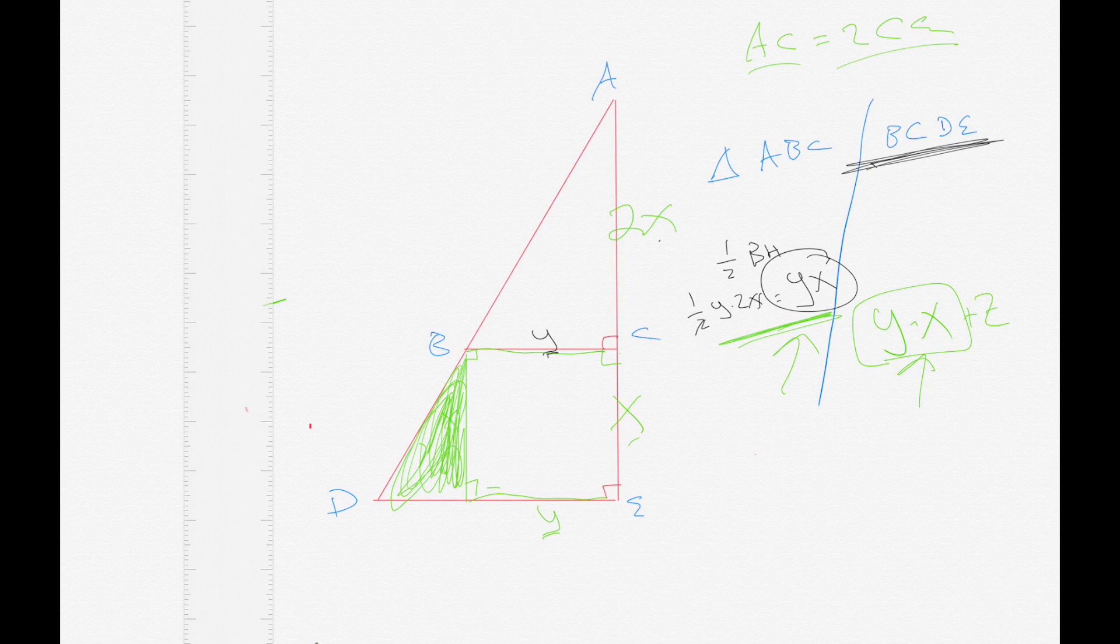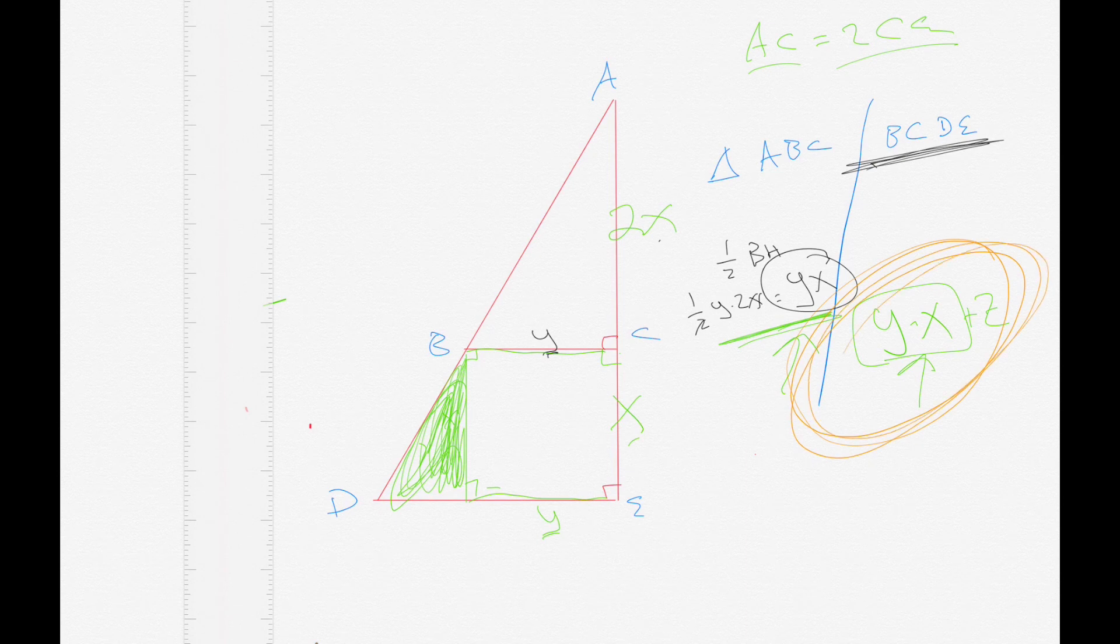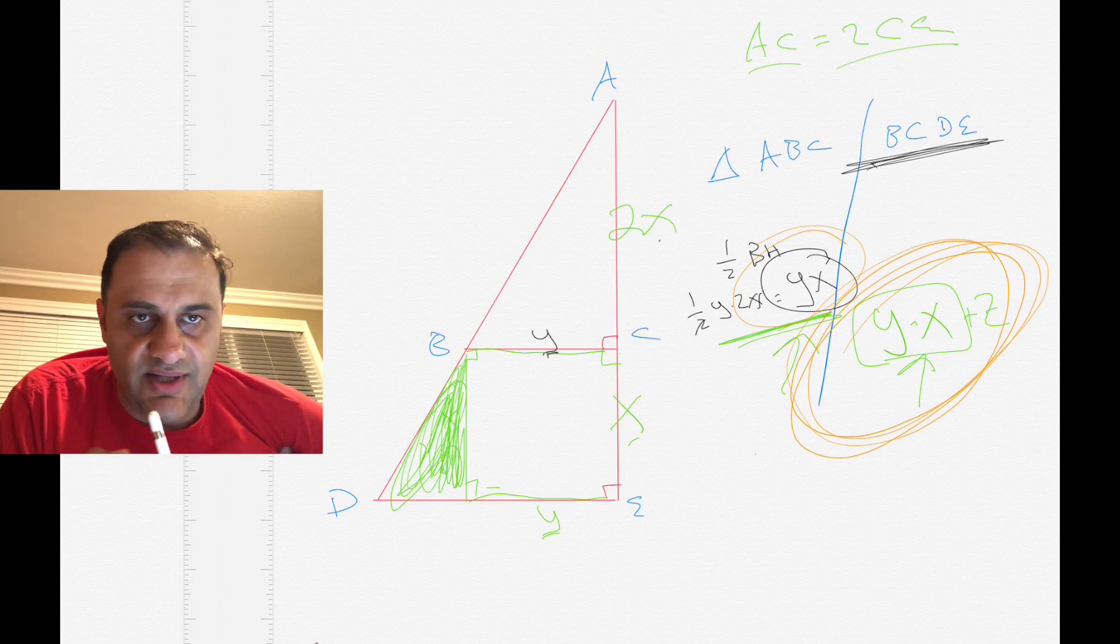Z has to be some sort of positive number. So then, therefore, this has to be at least a little bit bigger than the area of the triangle. So quantity B, which is the area of the trapezoid, is bigger than quantity A. So on the GRE terms, then the answer is B because quantity B is bigger.